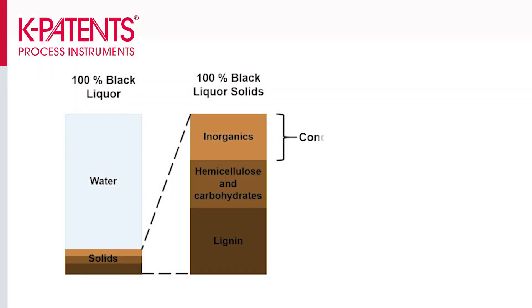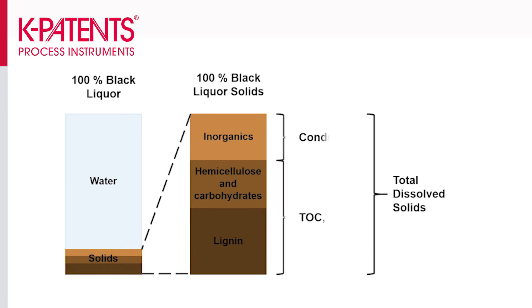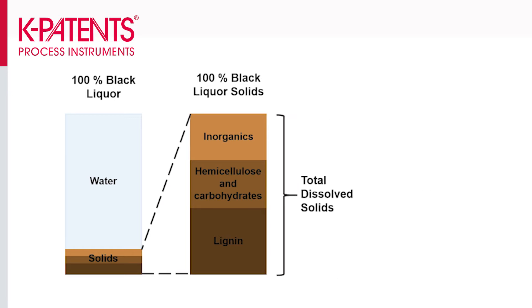While conductivity measures the inorganic changes, the COD laboratory test gives indication on the organic fraction of the total solids. COD has its place in the laboratory but it cannot be used for process control due to the considerable delay and labor involved. Total dissolved solids has proven to be the most suitable and most reliable parameter for measuring wash loss and washing efficiency, because it considers all washable solids — the organics and the inorganics. This is the only true measurement of wash loss.